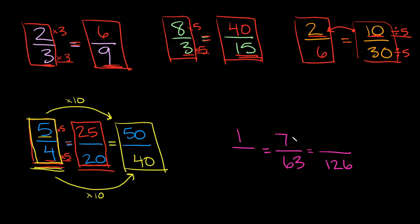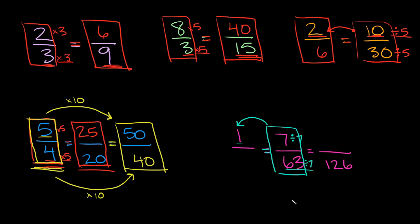Now let's do this last set. The fraction we are given is seven over 63. How do we get from seven to one? Well we would have to divide by seven — seven divided by seven is equal to one. So that means we're going to have to also divide by seven on the bottom. What's 63 divided by seven? That's equal to nine. So one over nine and seven over 63 are equivalent fractions.